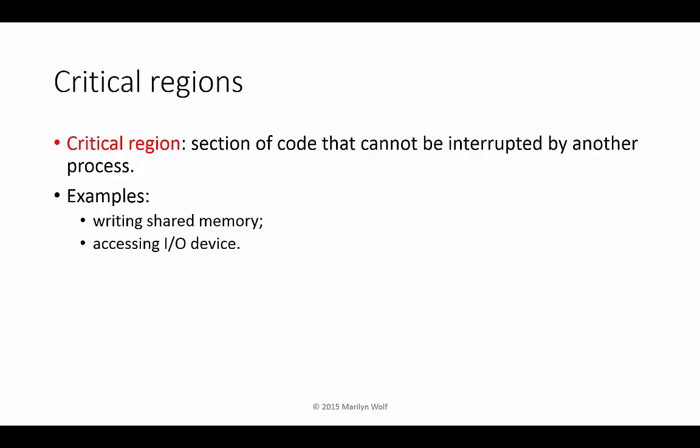We often think of blocking communication as representing a critical region. A critical region is a section of code that cannot be interrupted by another process, because that other process might, for instance, change a value in memory. Writing to shared memory or accessing the registers of an I/O device are common examples of critical regions.